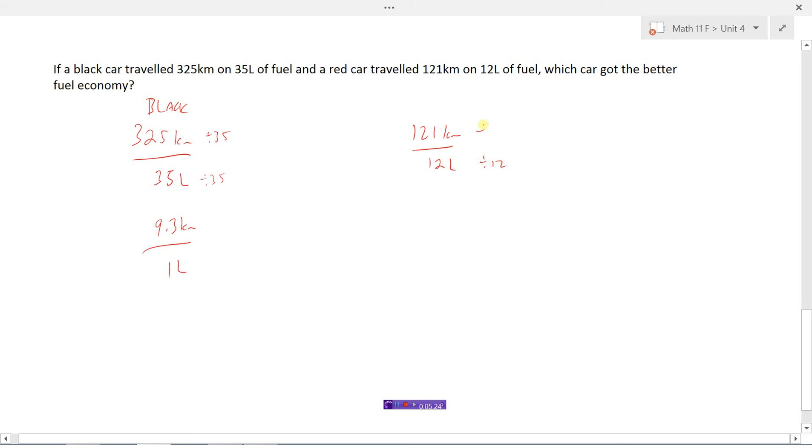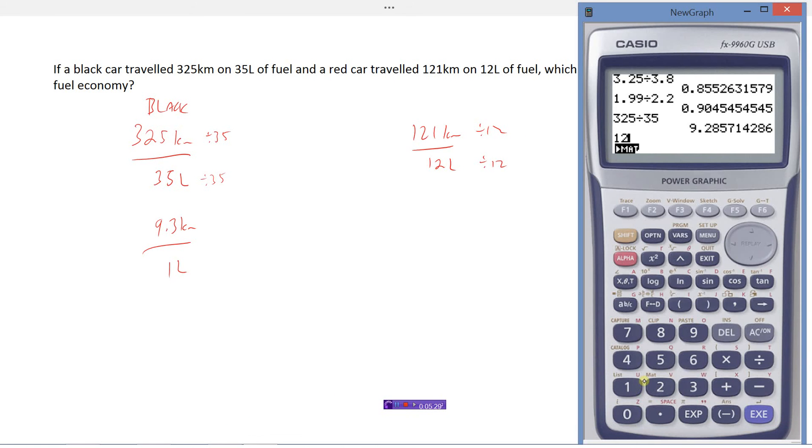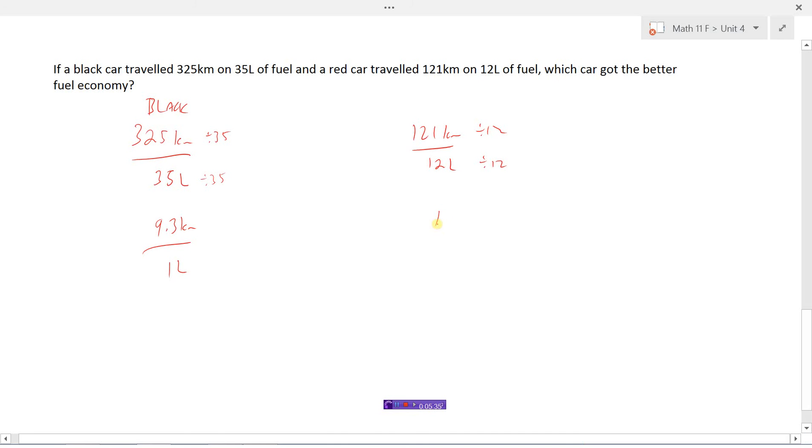This one, we'll divide by 12, and we get 10.1 kilometers for one liter of fuel. So the red car, the red car is the better fuel economy because it travels a farther distance per one liter of fuel.